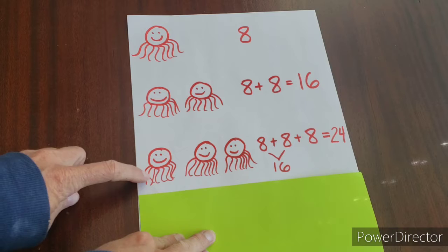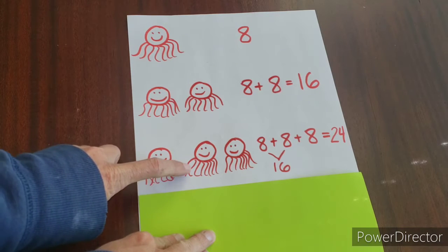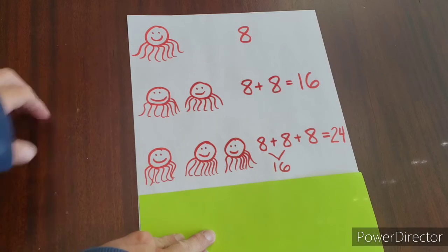And what you could do is you could say one, two, three, four, five, six, seven, eight, nine, ten. You could count all of them.